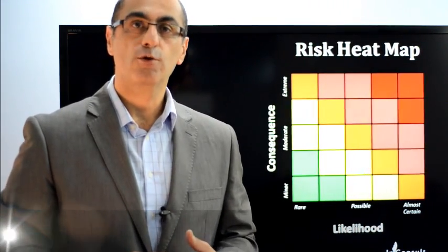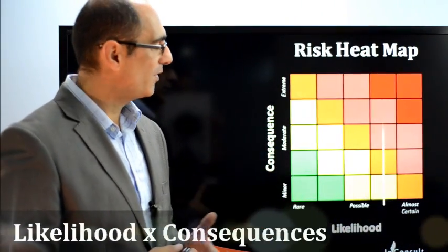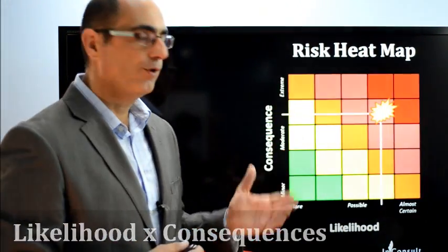The heat map plots the likelihood on one axis and the consequence on the other. The risk rating is where the two points meet.